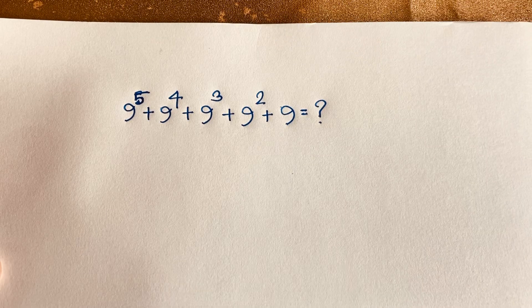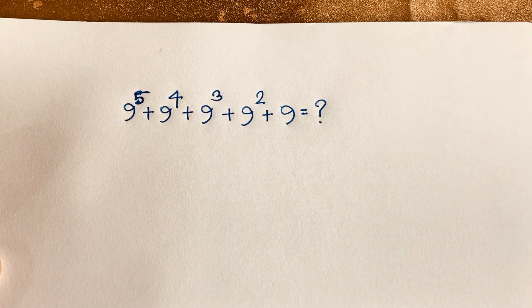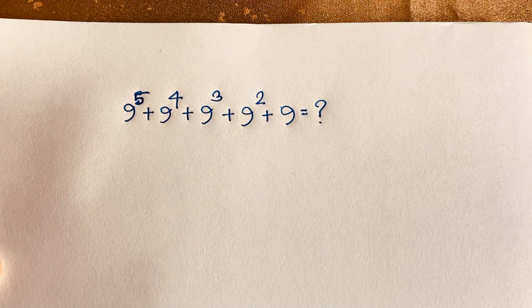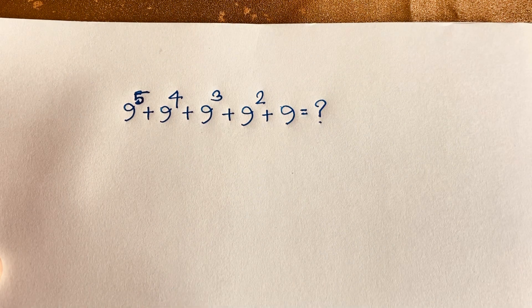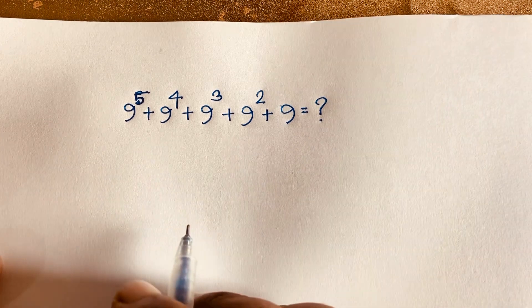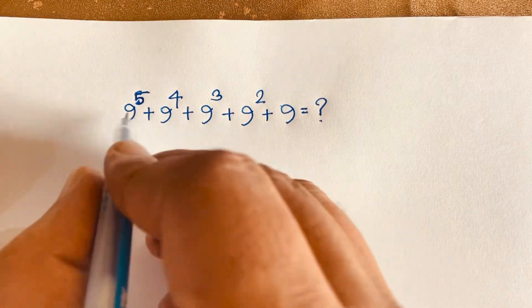Hello everyone. How to solve this math question with our calculator? It is an interesting math question: 9 to the power 5 plus 9 to the power 4 plus 9 to the power 3 plus 9 to the power 2 plus 9 is equal to what? How to solve this math question?